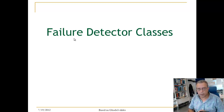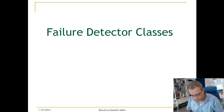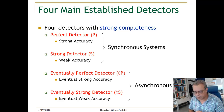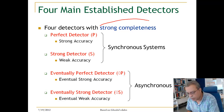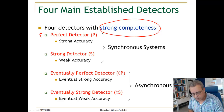Let us look at different classes of failure detectors. There are four main established failure detector classes. Two of them are for synchronous systems, and two of them are for partially synchronous systems. All of them have strong completeness as a property.